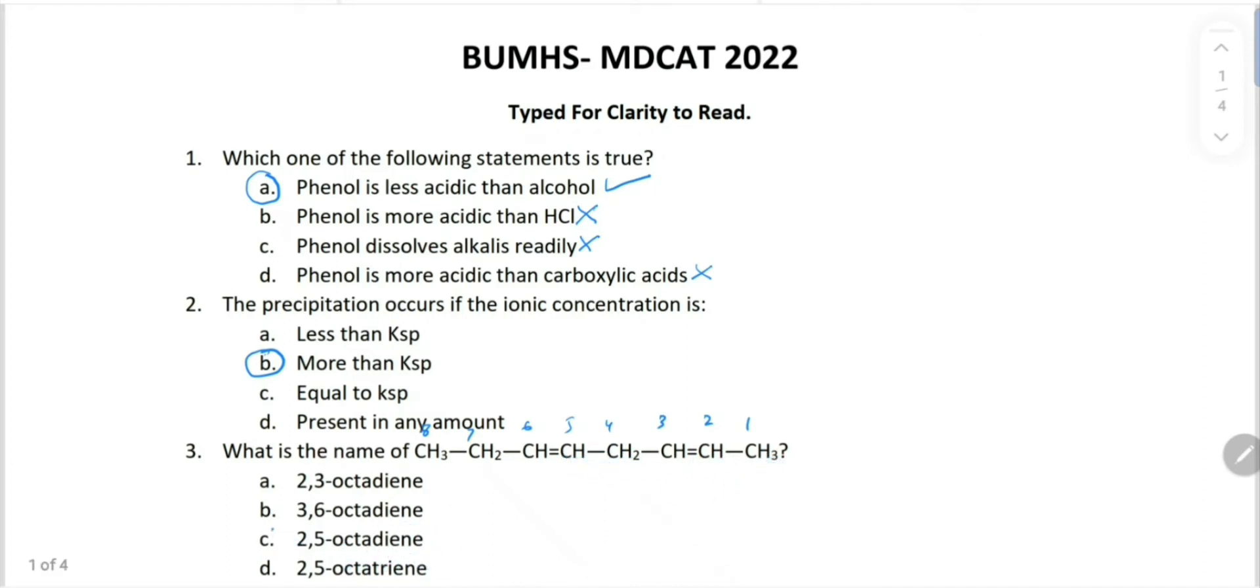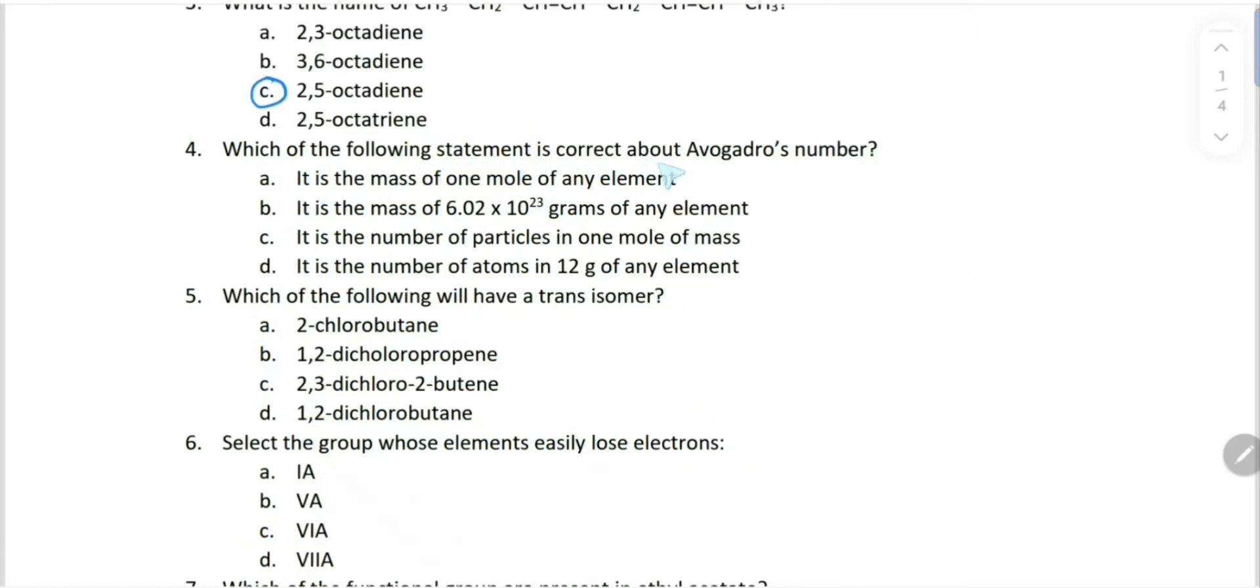Which of the following statement is correct about Avogadro's number? It is the mass of one mole of any element - no, that is known as molar mass, not Avogadro number. It is the mass of 6.0×10²³ grams of any element - no. It is the number of particles in one mole of mass - yes, this is correct. It is number of atoms in 12 grams of any element - no. So choice C is correct.